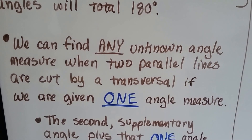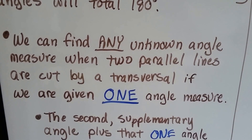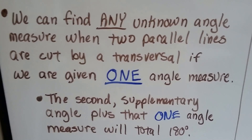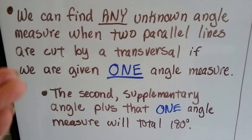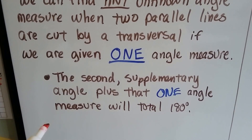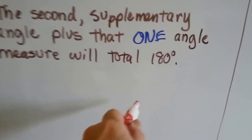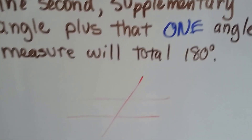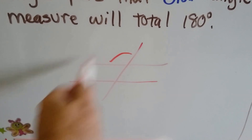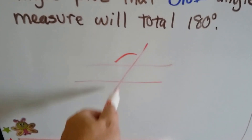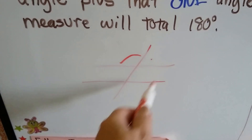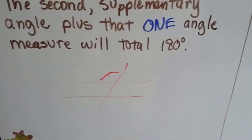We can find any unknown angle measure when two parallel lines are cut by a transversal if we're given one angle measure. As we saw in the last couple of videos, there's only two angle measures when parallel lines are cut by a transversal. The supplementary angle plus that one angle measure will total 180 degrees. If we've got one angle, we know four of them because they're all congruent, and the supplementary pair totals 180.